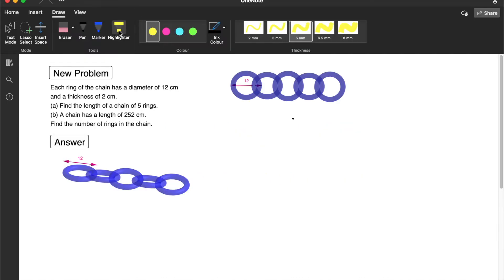Let's read the question together. Each ring of the chain has a diameter of 12 centimeters, as shown here, and a thickness of 2 centimeters. Part A, find the length of a chain of 5 rings, which is shown here. And part B, a chain has a length of 252 centimeters. Find the number of rings in the chain.